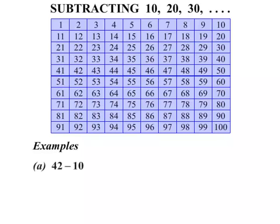Let's look at some examples. 42 minus 10. We start at 42. Now when we subtract 10 on the number chart, we simply jump up one spot. That is subtracting 10. So the answer there will be 32.